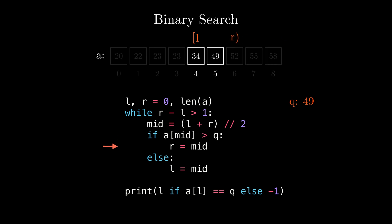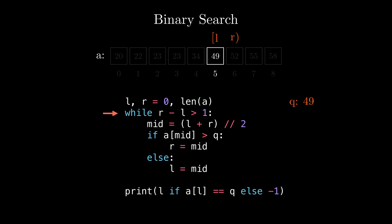We will then go back to check the condition of the while loop. As R minus L is equal to 2, we will enter the loop again. The value of mid now will be 4 plus 6 divided by 2, which equals 5. We will check if 49 is greater than 49. As it's not greater, we will enter the else block and set the value of L to 5. Going back to check the condition, R minus L is now 1, so we break the loop, and because the element at index 5 is equal to 49, we will print 5.